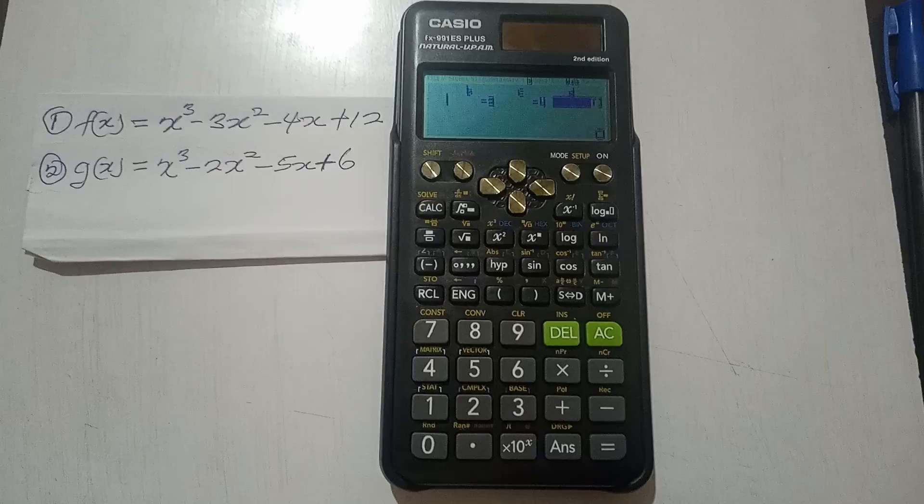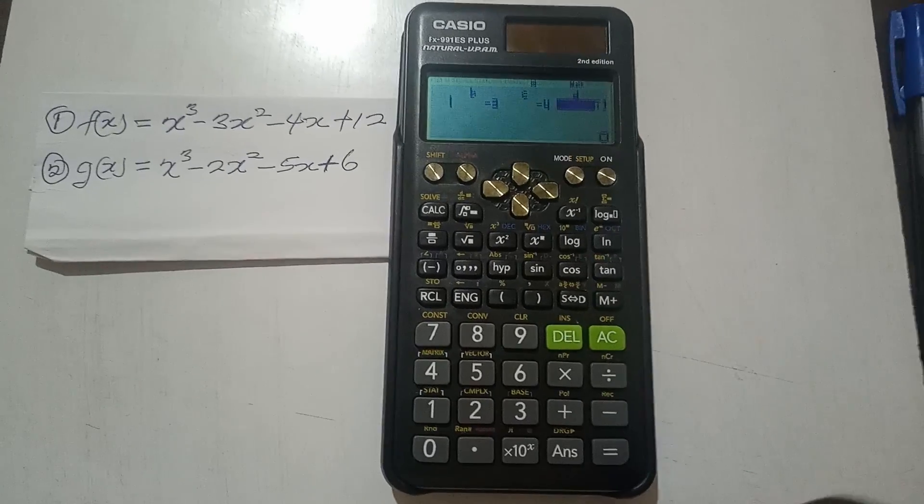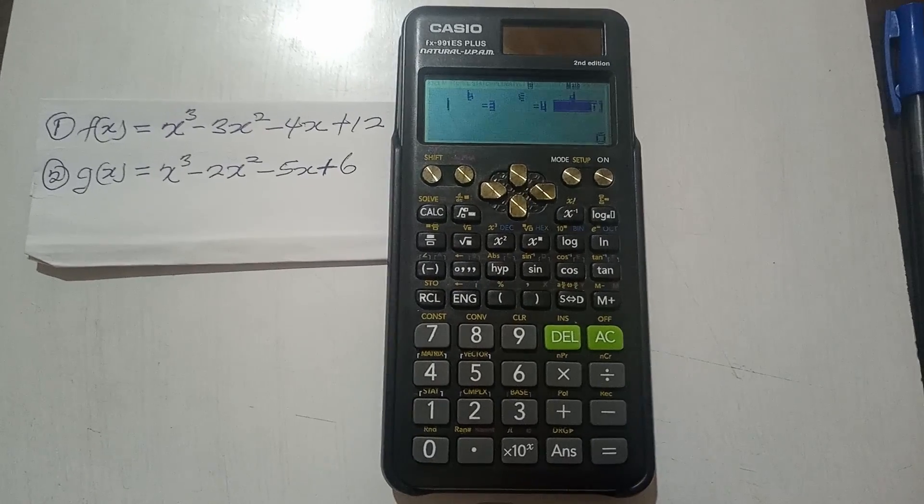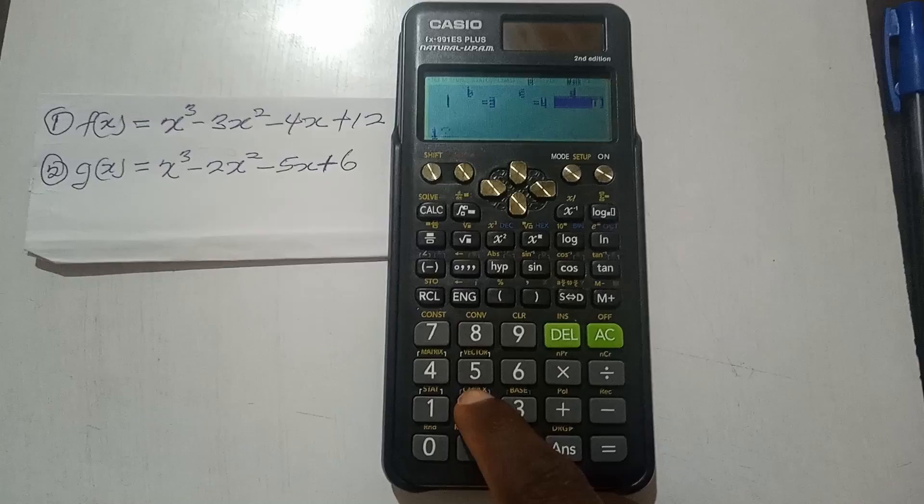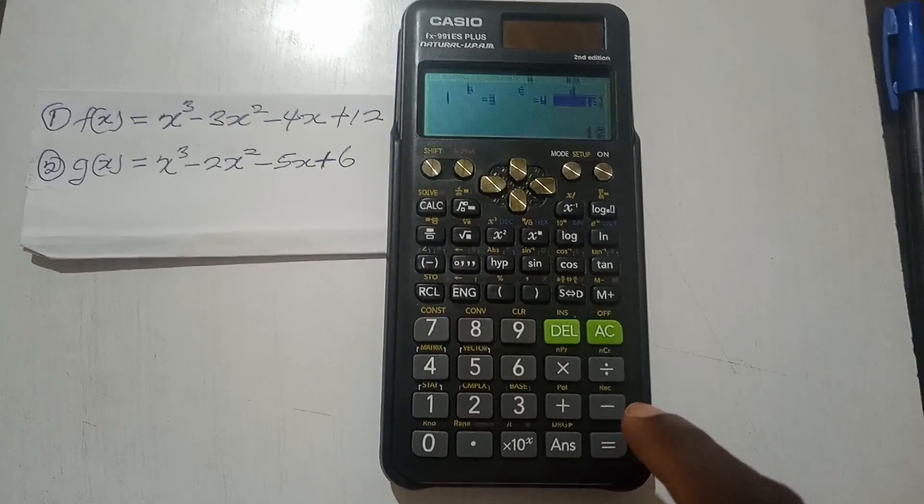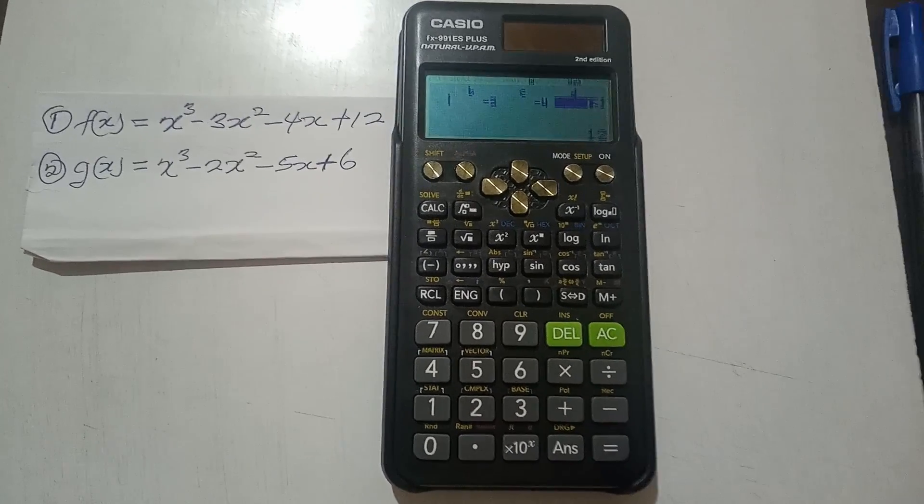We are pressing the equal to so that the cursor will be moving on to the next term. And then the last term, which is d, is 12, equal to, and then we have finished the entries.